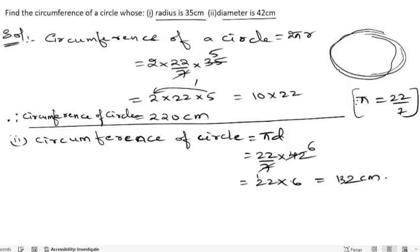Therefore, circumference of a circle is 132 centimeters.